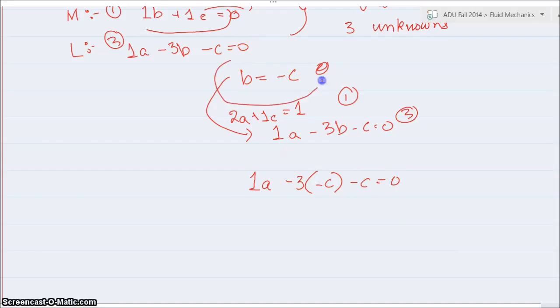I'm putting this equation in this equation, so I get a plus 3c minus c is equal to 0. a plus 2c is equal to 0. a is equal to minus 2c.